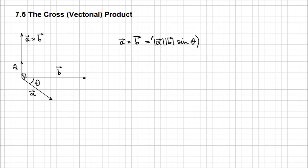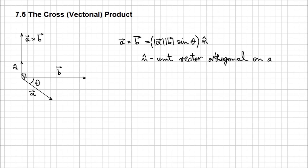This portion is the magnitude, times n — a unit vector notation you may encounter. This n gives you the direction, and it's a unit vector which is orthogonal on a and b. Since it's a unit vector, it has a magnitude of 1, so it doesn't add anything to the magnitude of this resultant, but gives it a direction.